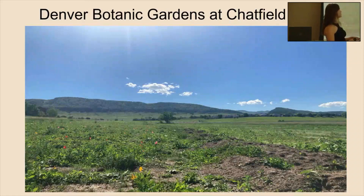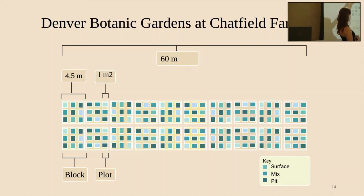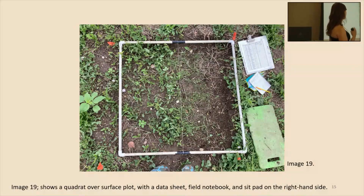I conducted my research at the Denver Botanic Gardens at Chatfield Farms, and here's a representation of what my field site looked like. We have these blocks which are 4.5 meters — they have 9 plots and each plot is 1 square meter. The surface plots are represented in light blue and the pits in dark blue. I used a quadrat to help determine the perimeters of each plot and to help eliminate bias. A quadrat is a fixed square made of PVC pipe that is used to collect samples from a given area — it's a really high tech piece of equipment.